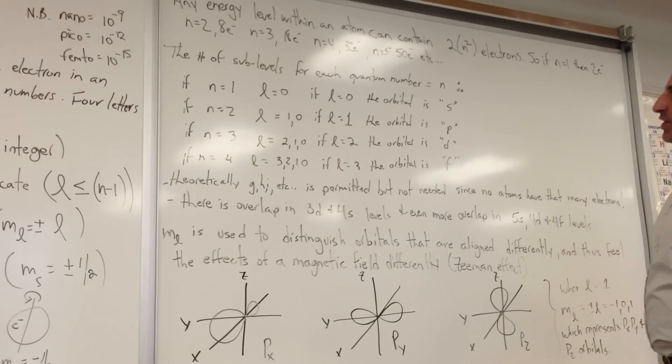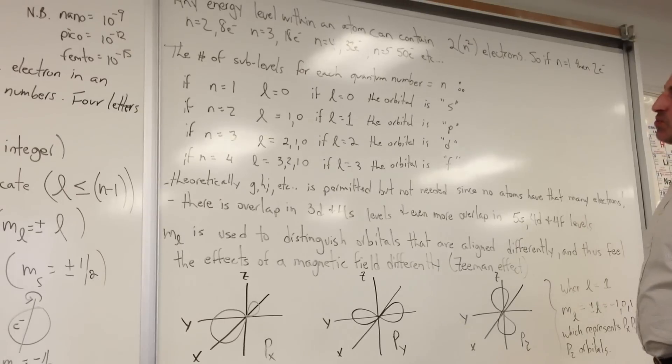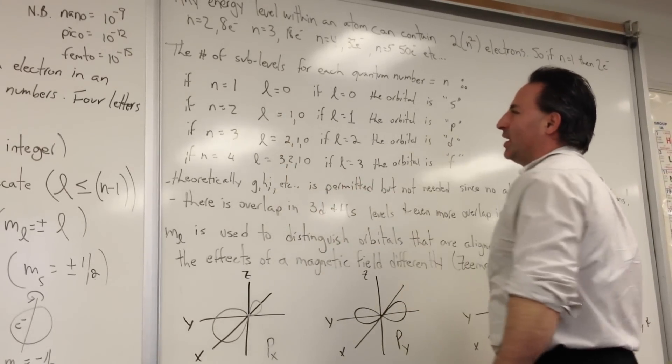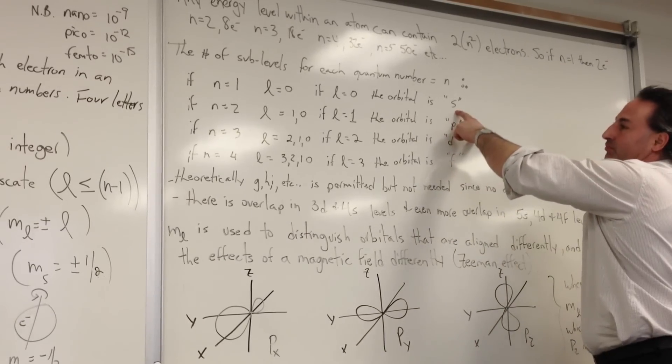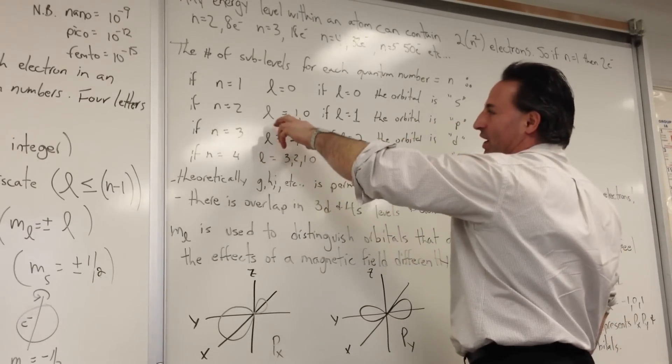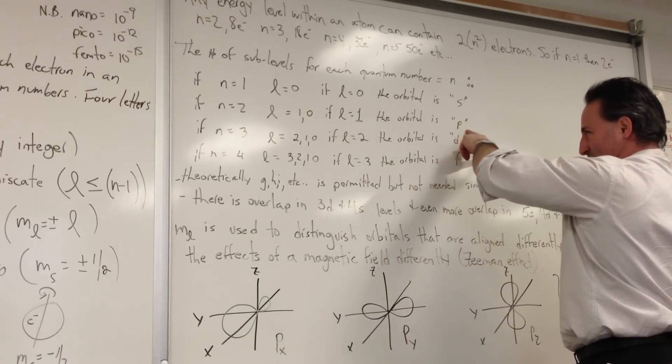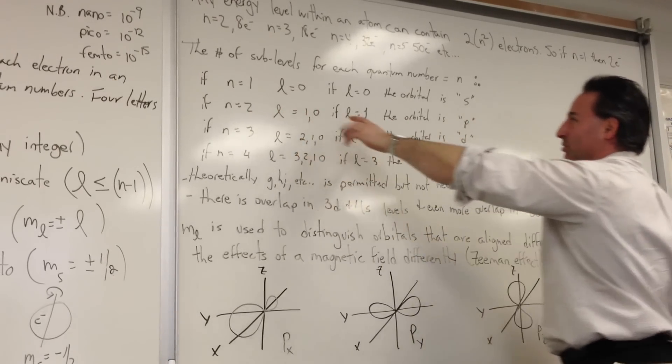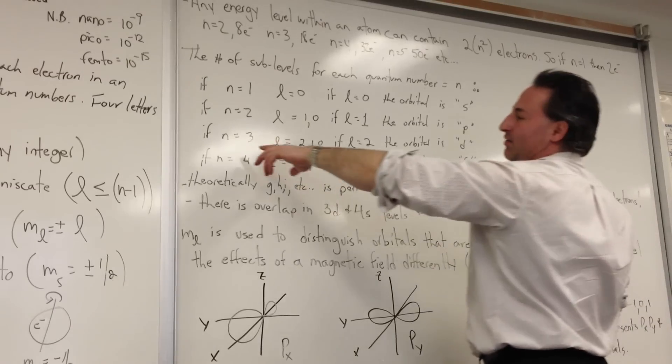The number of sublevels for each quantum number is equal to n. Therefore, if n equals 1, you can get L equals 0. And of course, when L equals 0, the orbital is called an s-orbital. If n equals 2, L can be 1 or 0. And when n equals 1, the orbital is a p-orbital. So when you have n equals 2, you're also able to have an s-orbital.